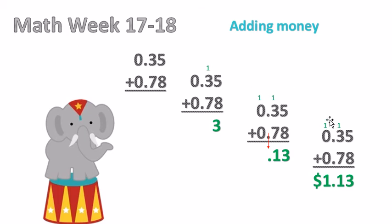And so now we're ready to add again. So 1 plus 0 plus 0 equals 1. And so 35 cents plus 78 cents equals $1.13. Everything on the left side of the decimal would be dollars.